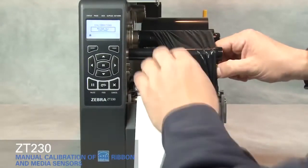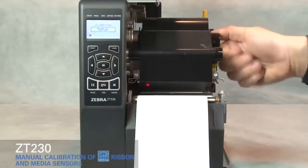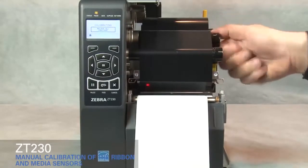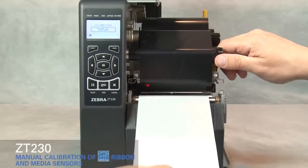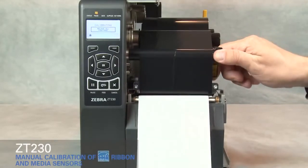Open the print head. Straighten the ribbon. Turn ribbon spindle to the right to remove ribbon slack. Pull the media forward until a label is positioned under the media sensor. Close the print head.